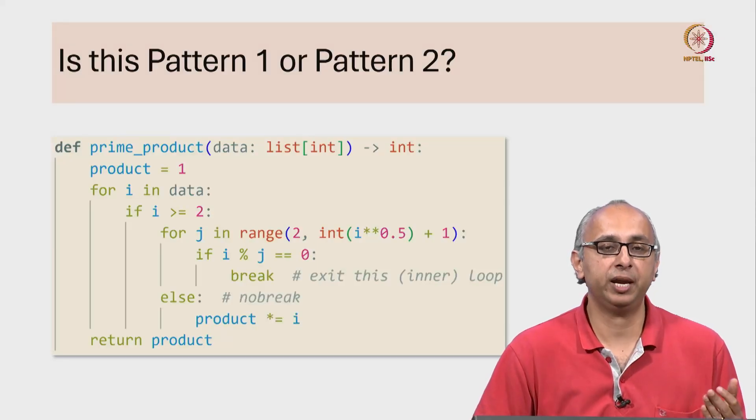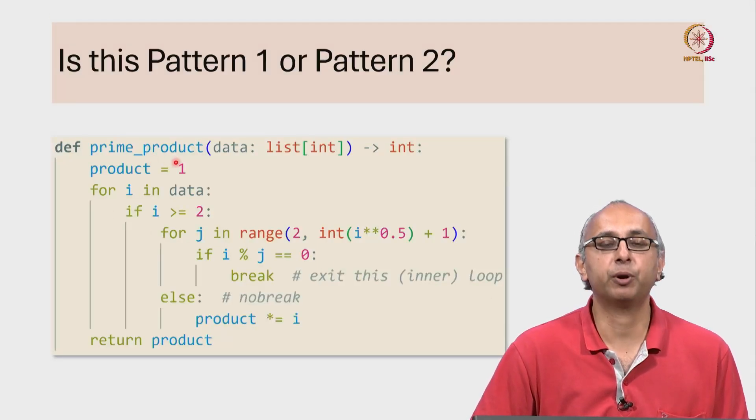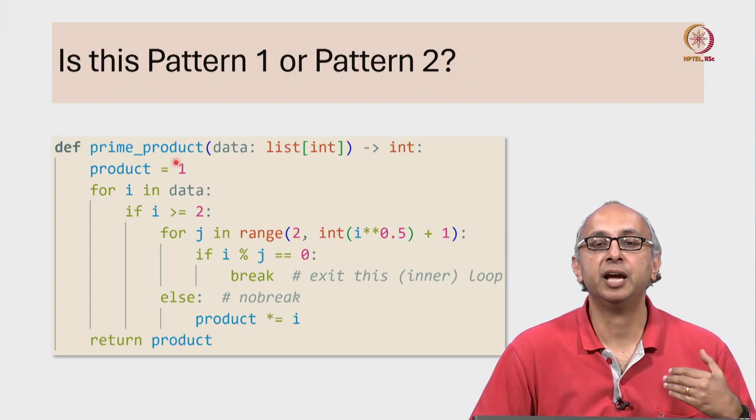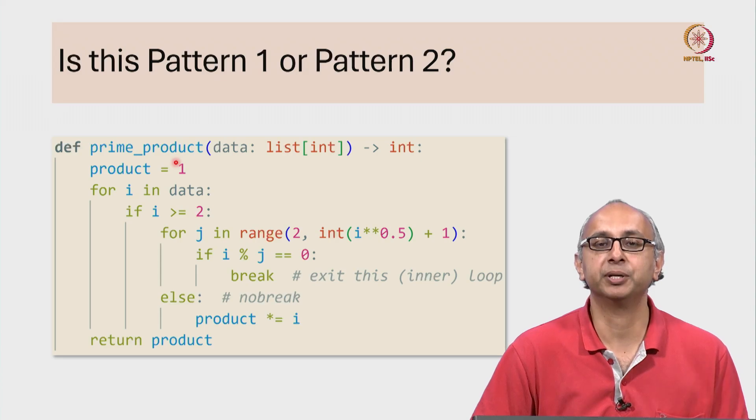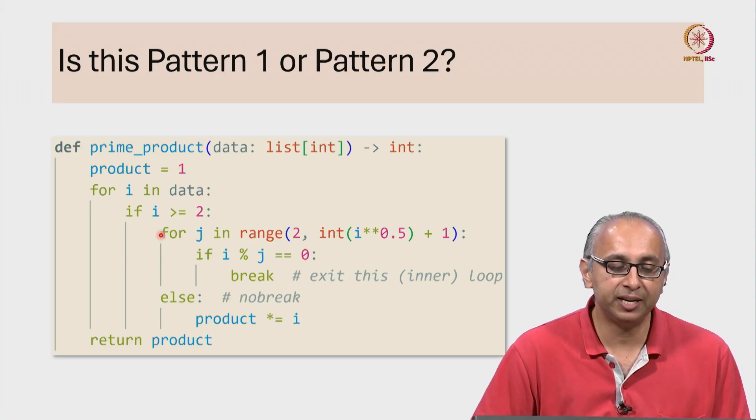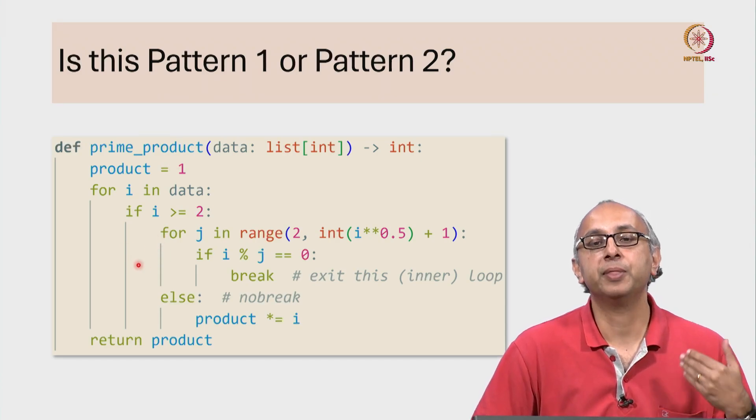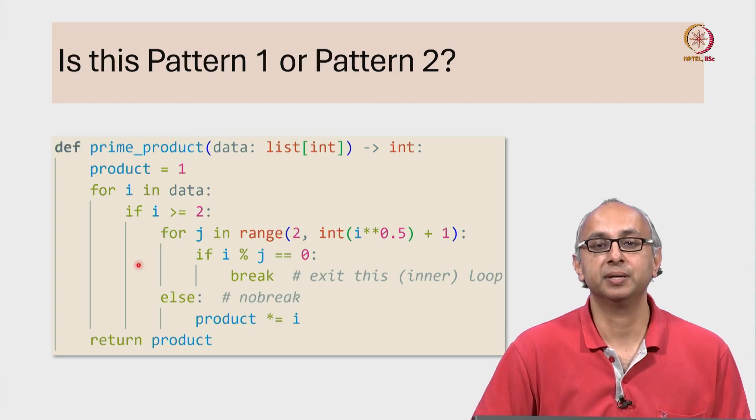So here is another way we could have written the prime product function. Instead of having a helper function to check if a given number is prime, you will see that I have an inner for loop that does the same task.